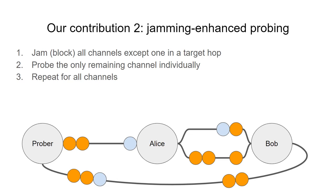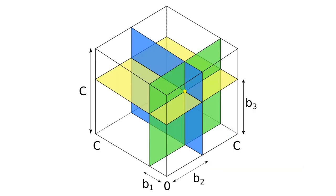As you may have noticed, the hop between Alice and Bob has essentially become single-dimensional, and now the prober can probe it as usual as if it contained just a single channel. And then repeat the process for all other channels in the multichannel hop.